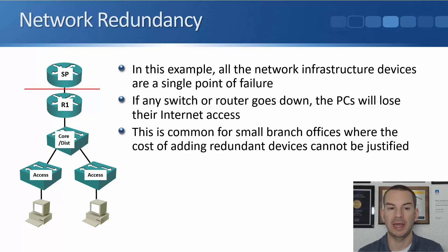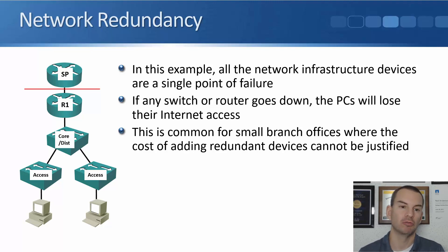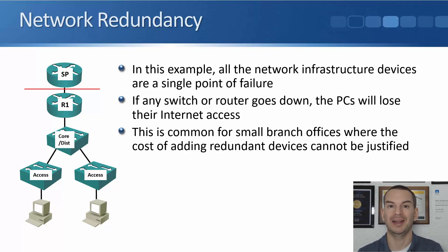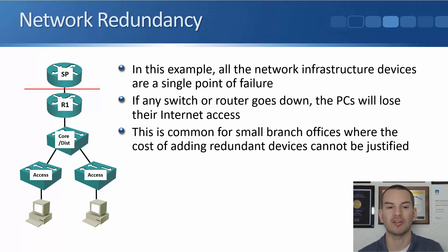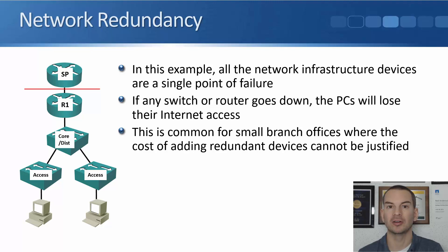R1 is the enterprise WAN edge router. From R1, we've got a single connection going to a single service provider router. We've only got that one edge router R1, a single core distribution layer switch, and single access switches. So if any one of those devices goes down, our PCs are going to lose connectivity — no redundancy there.